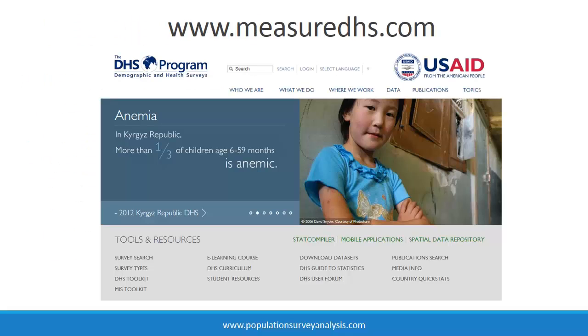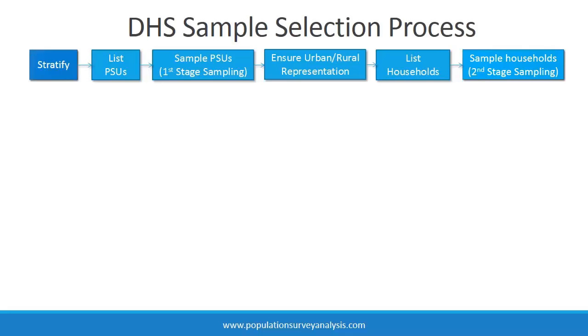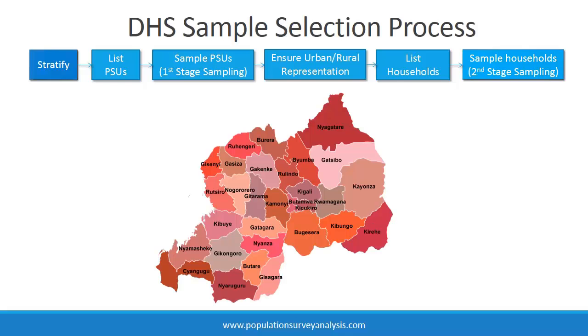See MeasureDHS.com for more information. Now let me review an example, the 2010 Rwanda DHS, with more explanation about each aspect of the study design. The first step is stratification. The Rwandan government decided to make estimates of demographic and health outcomes at the district level since their health system administers care and implements policy by district. This means that the sample was stratified by district — an independent sample of households was drawn in each of the 30 districts.